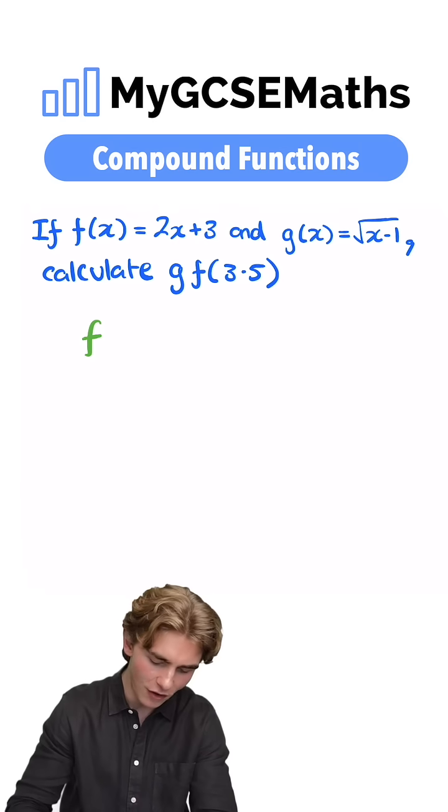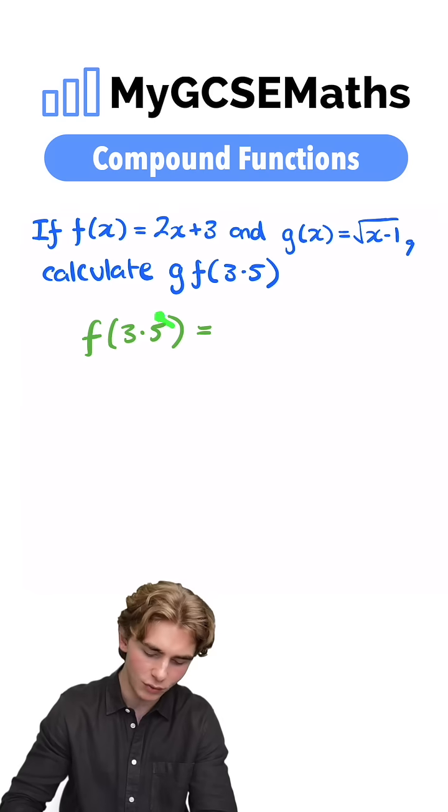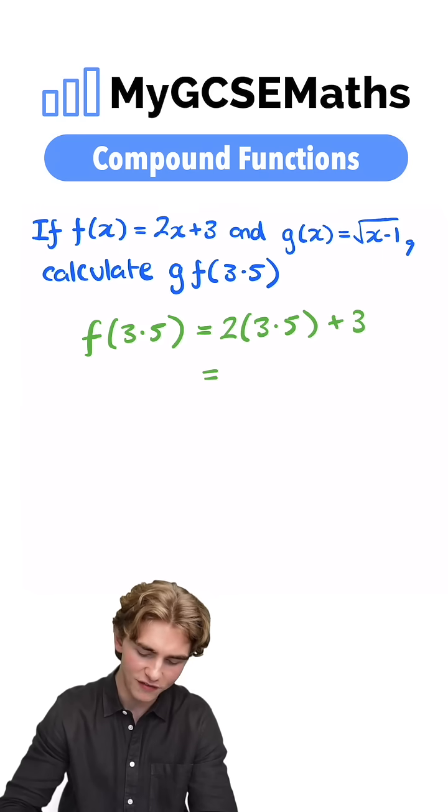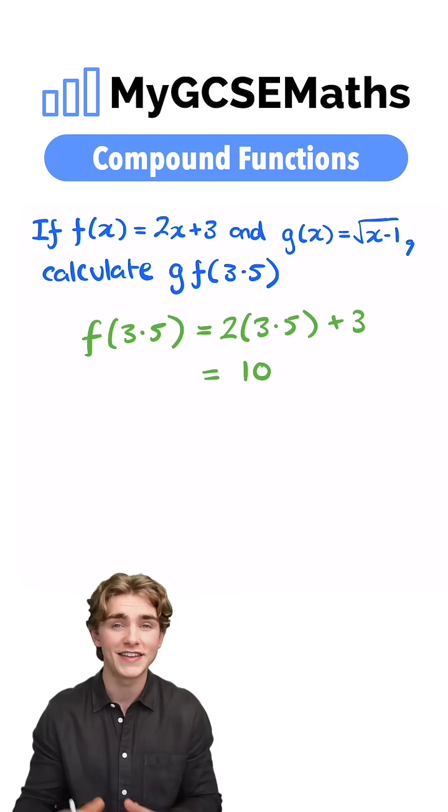Let's calculate f(3.5) by substituting x = 3.5 into f(x). So we have 2 × 3.5 + 3. We can simplify this: 2 × 3.5 = 7, so we have 7 + 3 = 10.